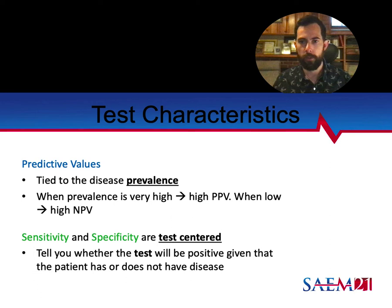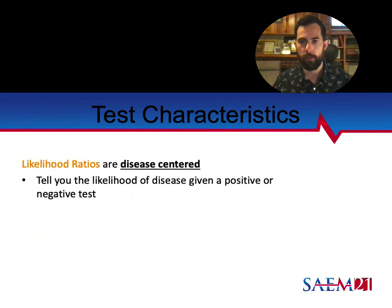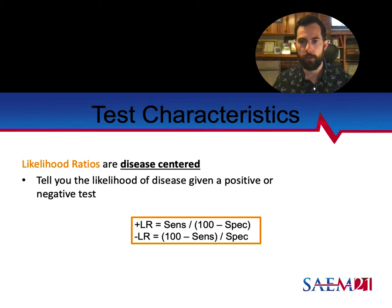Sensitivity and specificity are test-centered — they tell you about the test given that the patient does or does not have the disease. But think about yourself as the doctor: you're doing a test because you want to know if the patient has a disease. Sensitivity and specificity don't actually tell you that directly — they tell you if the test will be positive if you already know the patient has the disease. That's why likelihood ratios are considered more appropriate for clinical decision making: they are disease-centered, telling you the likelihood of having the disease given a positive or negative test. Both the positive and negative likelihood ratios are calculated using both sensitivity and specificity.